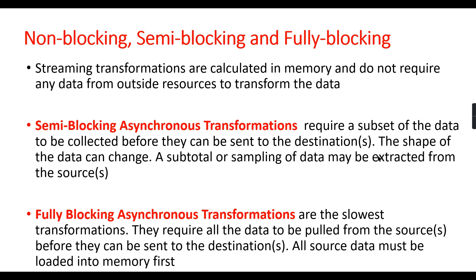With semi-blocking, only a subset of data can be processed before the output is sent, and the shape of data can change — pivoting operations fall under this category. Fully blocking asynchronous transformations are the slowest because they require all the data to be pulled from the source before it can be sent to a destination — all source data must be loaded into memory first.